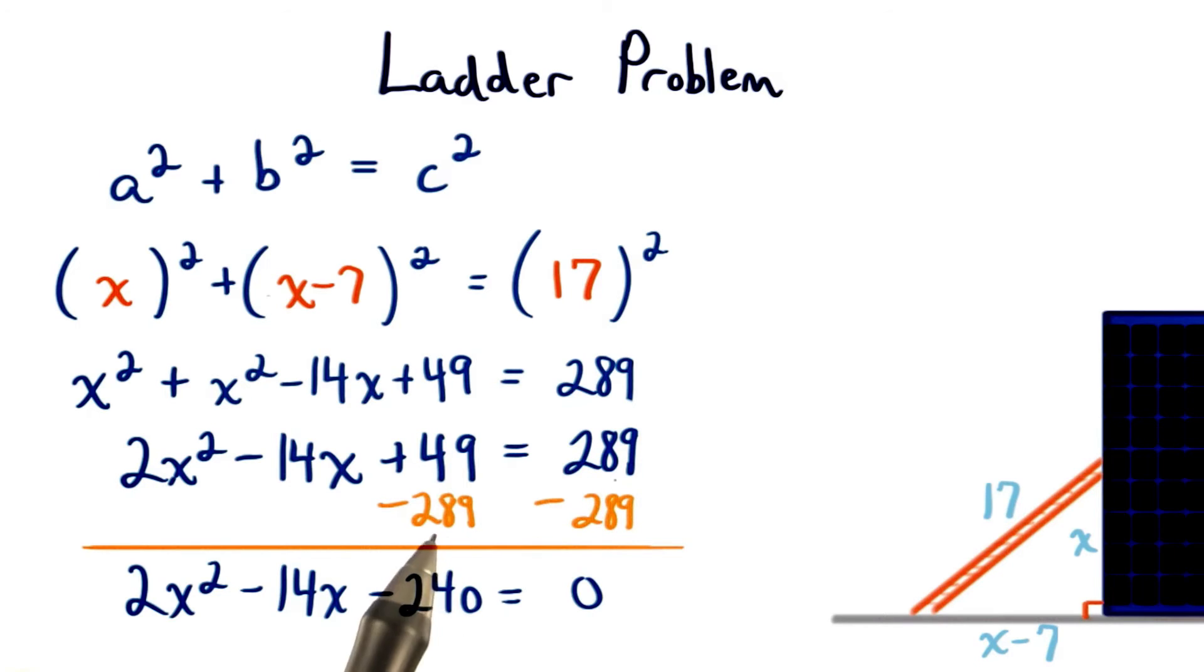Then we'll subtract 289 from both sides to get our quadratic expression set equal to 0. Each of these terms is divisible by 2, so we can divide our equation by 2.